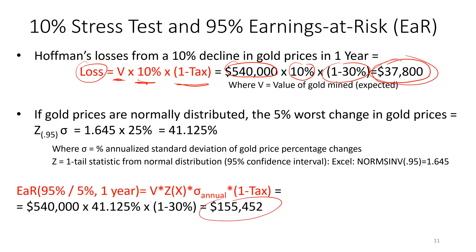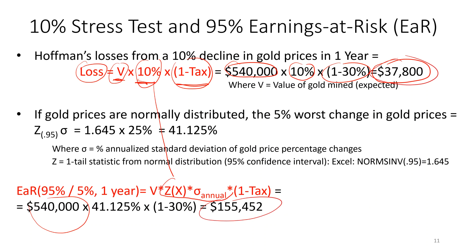Now I want to make the stress test stochastic. That means instead of just making up a value for the gold price decline, I want to actually calculate what the 5% worst-case change in gold prices is, assuming gold percent changes are normally distributed. Using the same formula as before — value of gold times the percentage change times one minus the tax rate — I'll replace the 10% with Z(X) times standard deviation, where the standard deviation is my measured 25%.